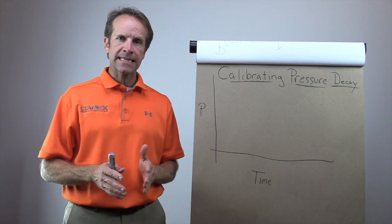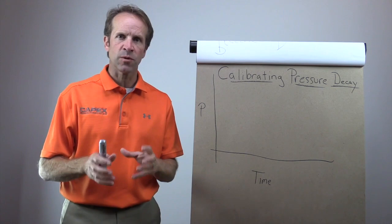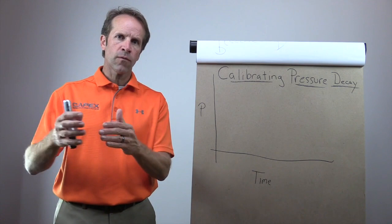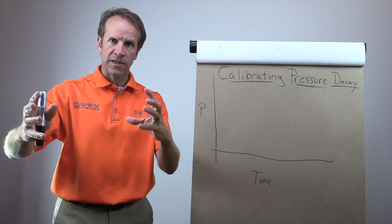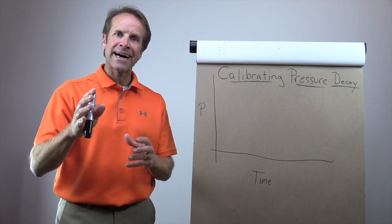Let's talk about pressure decay leak testing. Pressure decay leak testing is a measure of pressure loss over time. So we pressurize a part and we measure pressure loss out of that part over a specific amount of time. Theoretically, I've got my instrumentation connected to a part that is fixtured. We seal the part, we pressurize the part, and we are going to then isolate the part.